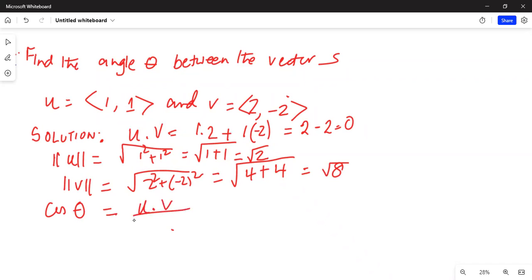dot v divided by absolute value of u multiplied by absolute value of v. Now u dot v is 0, and absolute value of magnitude of vector u is square root of 2, and magnitude of vector v is square root of 8.